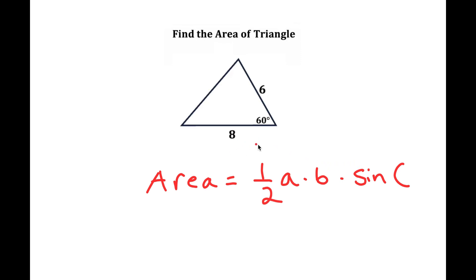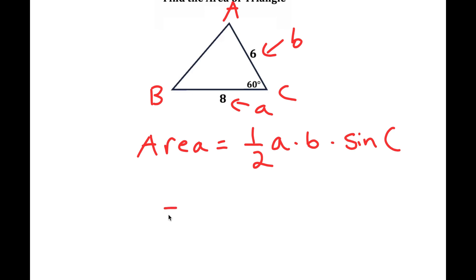So in this case, a is this side length, and b is this side length. And sine of c, well, we can label this a, b, and c. So this angle is c. So the area is going to equal one-half times a, which is 8, times b, which is 6, times sine of c, which is going to be sine of 60.